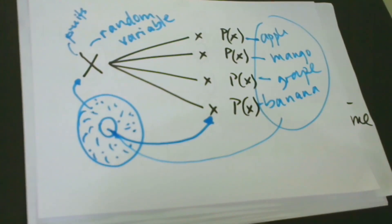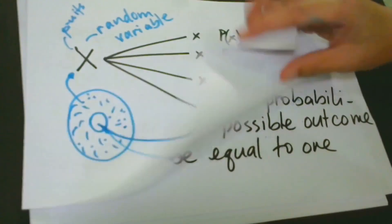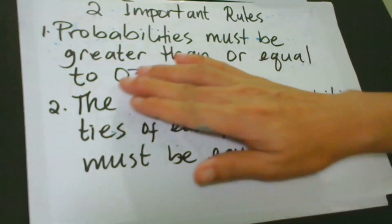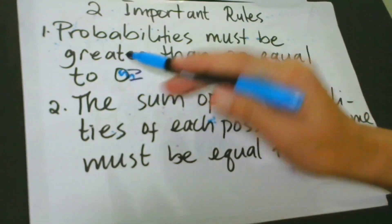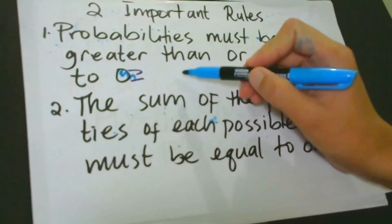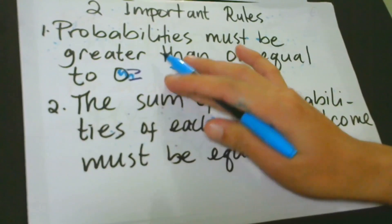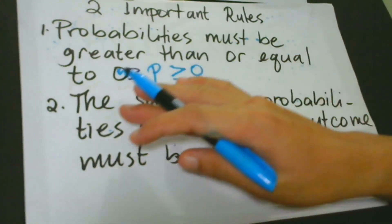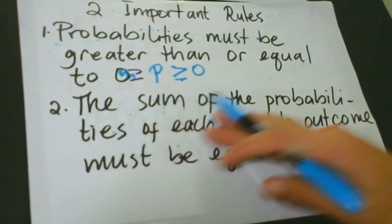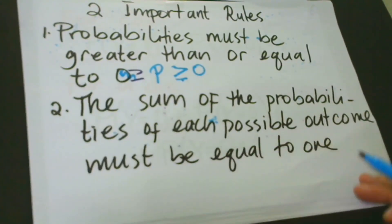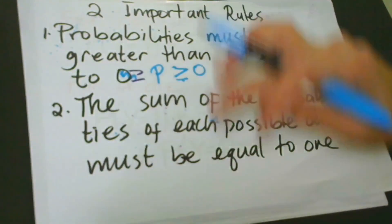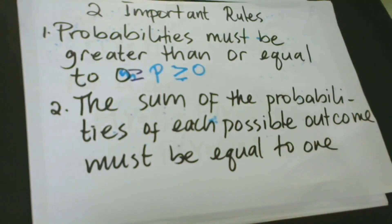In understanding probability, there are two important rules that govern it. The first rule is that probabilities must be greater than or equal to zero. The second rule is that the sum of the probabilities of each possible outcome must be equal to one. So while each individual probability must be greater than or equal to zero, if we sum up all the probabilities, the total value would be one.